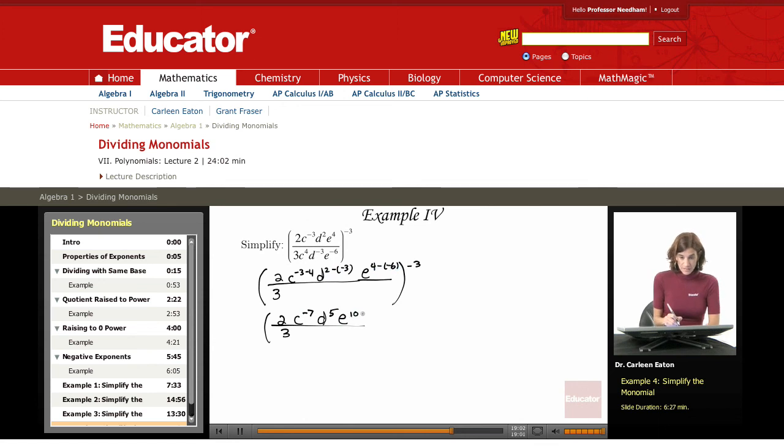Now all this is negative third. Before I go on and deal with this power raised to a power, I want to take care of the negative seven. I want to avoid having negative exponents. And I can just remember my rule that says that a to the negative n equals one over a to the n.